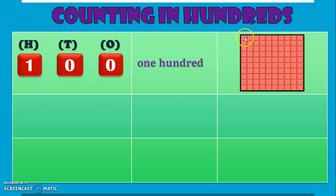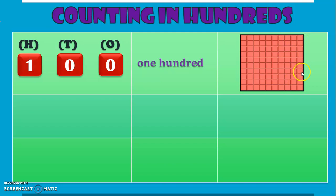You can also count it this way: 1, 2, 3, 4, 5, 6, 7, 8, 9, 10. So this is our first group of 10. Similarly, you have your second group, third, fourth, fifth, sixth, seventh, eighth, ninth, and tenth. So we have 10 groups of 10s making 100. It is very important to understand this representation because the rest of the session in this chapter will be based on understanding the representation of 100 in this format.